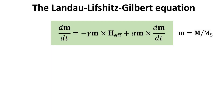The Landau-Lifshitz-Gilbert equation, or LLG equation for short, is a fundamental equation in the field of magnetism that describes the dynamics of magnetization in magnetic materials. It combines the principles of classical mechanics and quantum mechanics to provide insights into the behavior of magnetic systems.